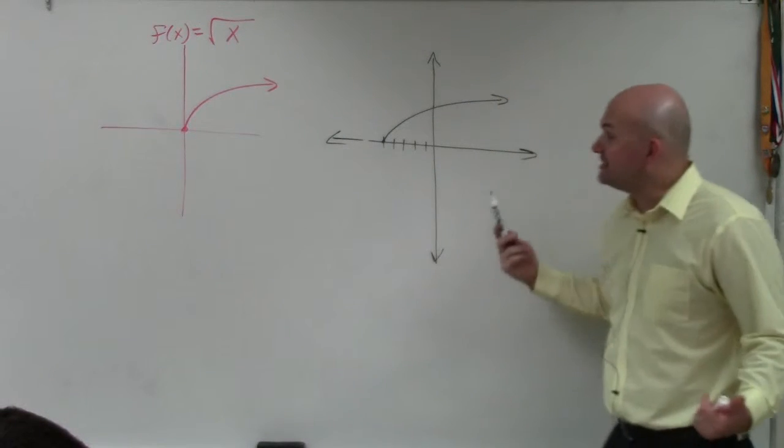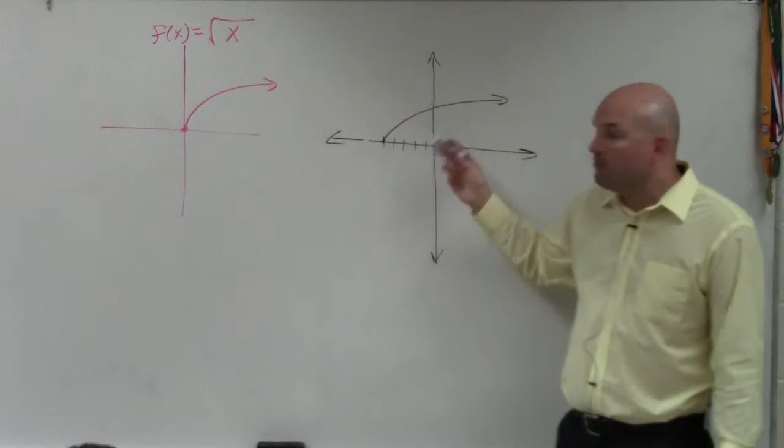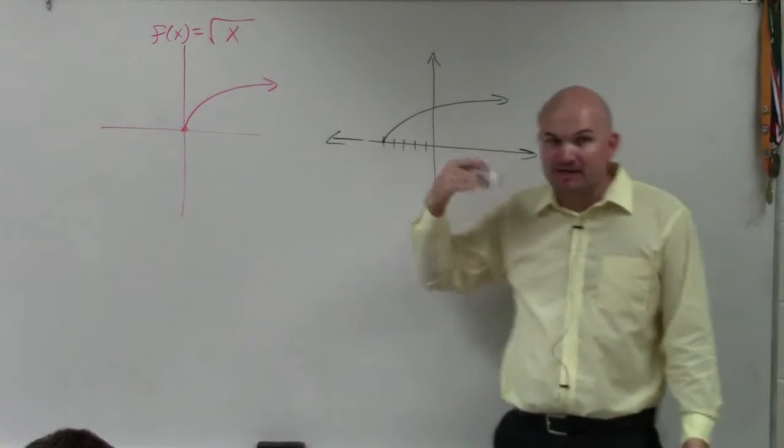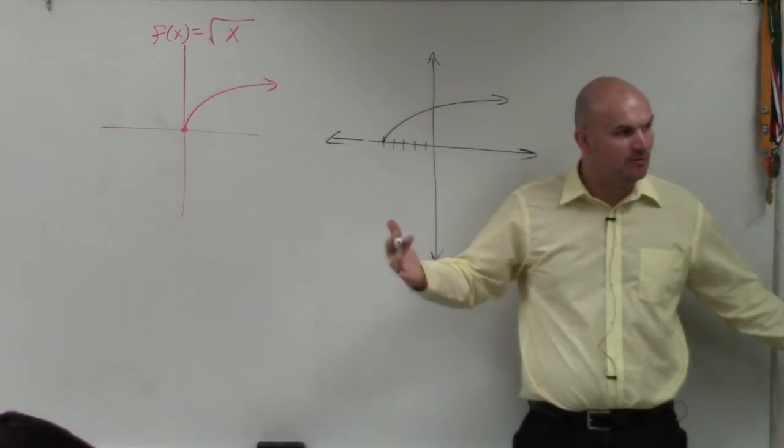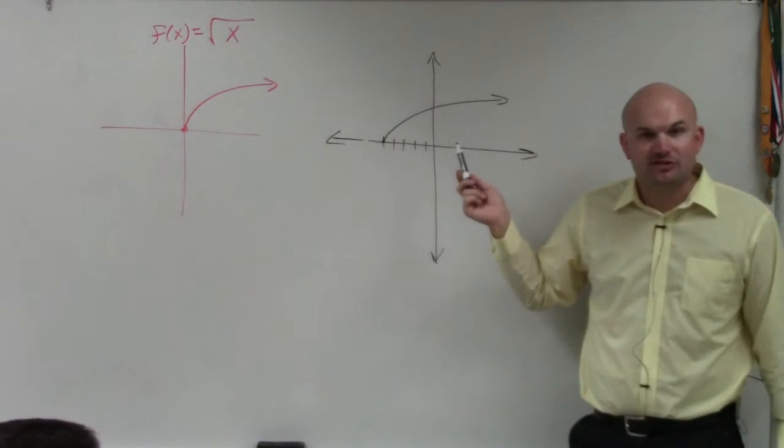So what they're asking is, how can I now write the equation for this? What would be the equation for this? So basically, we need to think about what transformation happened. How did I go from this to that? What did the graph do?